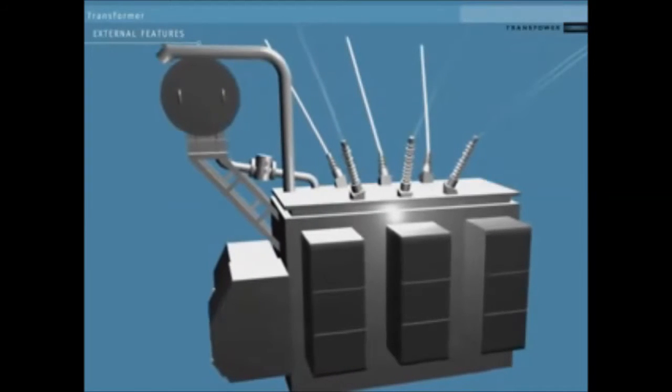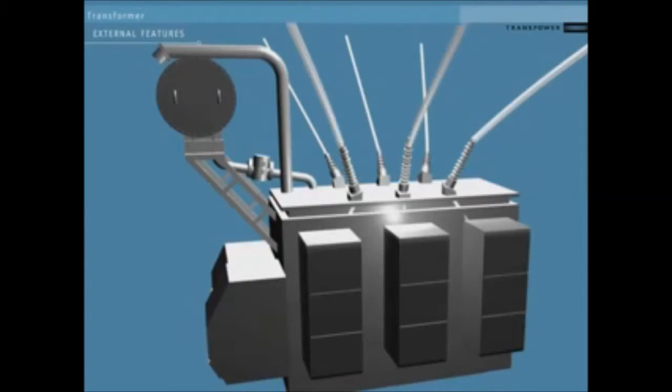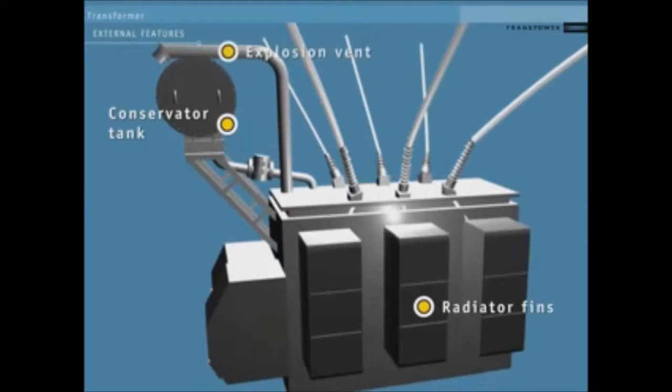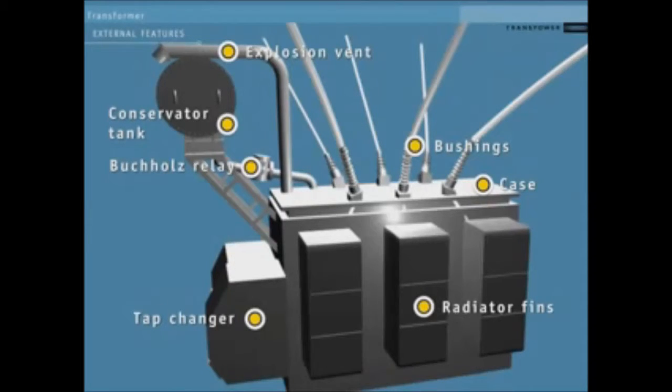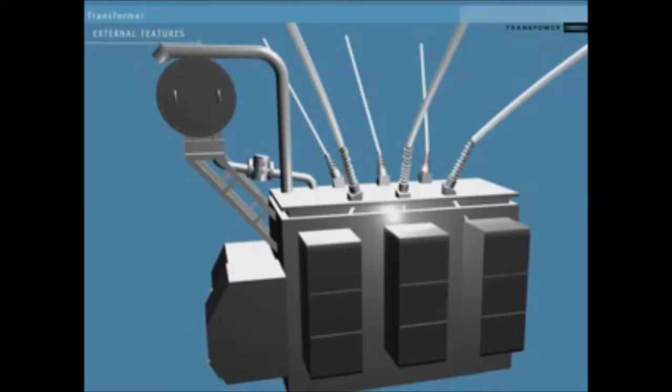On the outside of the transformer are a number of external components. Some help it to remain at a good working temperature. Some help make it safer in the event of an accident, and some are used for monitoring. The radiator fins help cool the oil in the case. The conservator tank allows for the oil to expand and contract as it heats and cools. The explosion vent protects the transformer in the event of a major fault. The bushings insulate the conductors where they enter the case. The tap changer sets the exact amount of voltage change. The Buchholz relay lets us detect the presence of gas caused by the deterioration of the oil and/or a rapid increase of oil pressure.